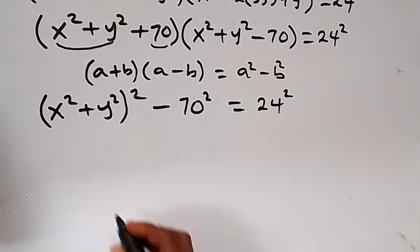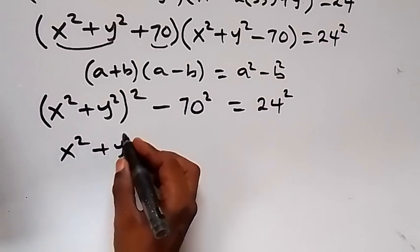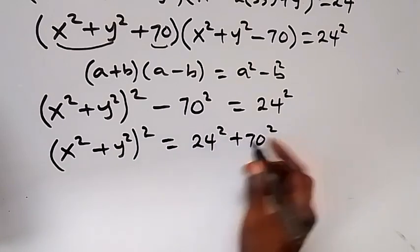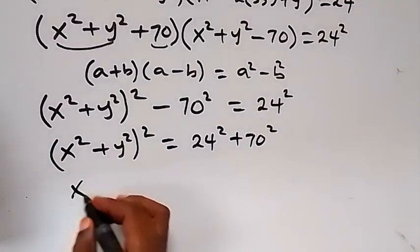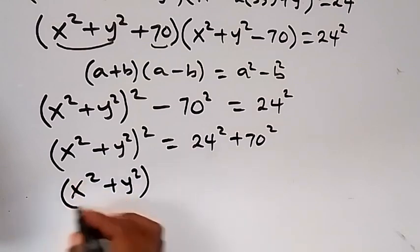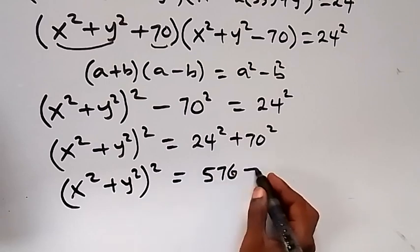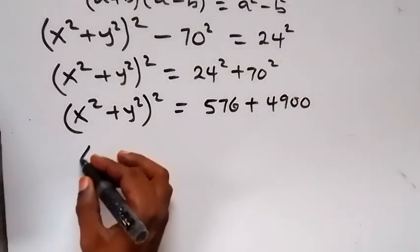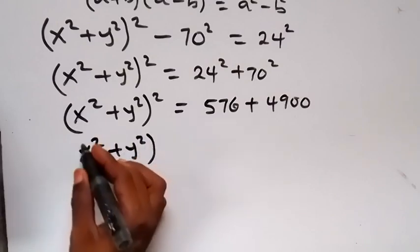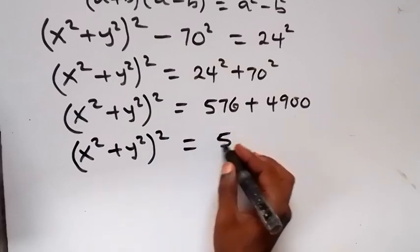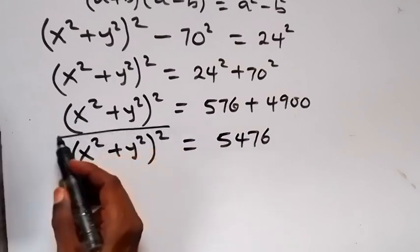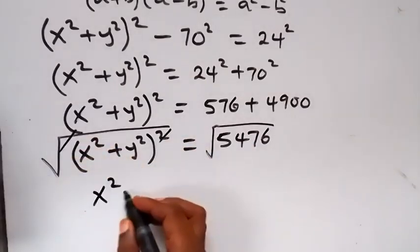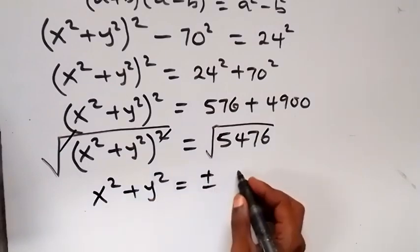Let's take minus 70 squared to the other side — it becomes plus. So we have x squared plus y squared, all squared, equals to 24 squared plus 70 squared. When we add them together, this gives us 576 plus 4900, so x squared plus y squared, all squared, equals 5,476. Taking the square root on both sides, we get x squared plus y squared equals plus or minus 74.